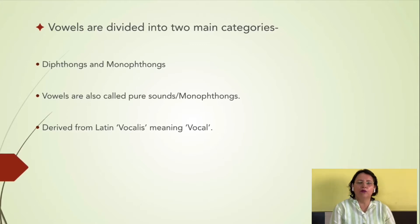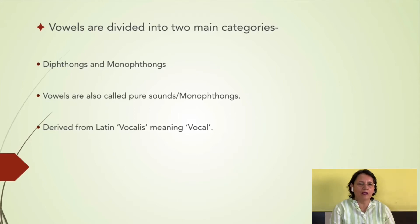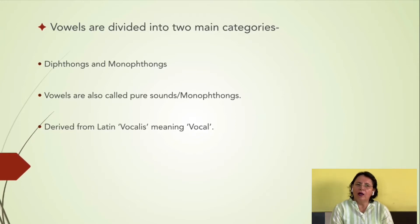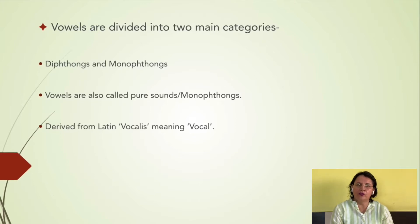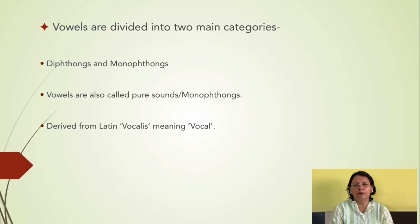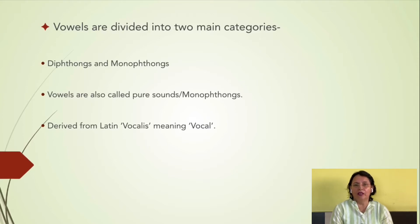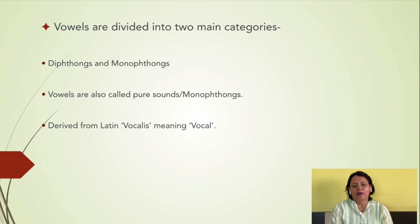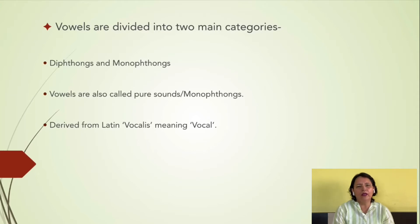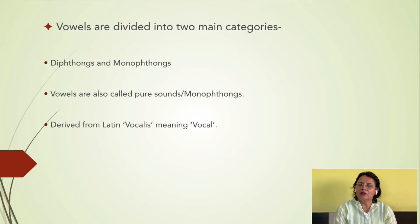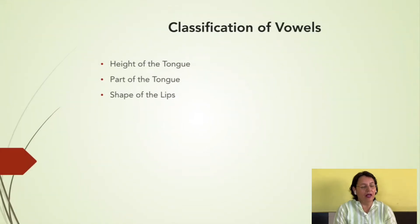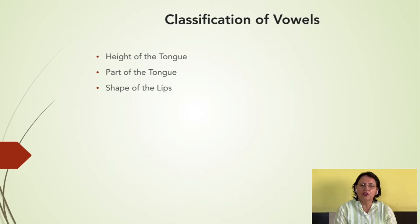Let us see what is the mode of classification of vowel sounds. Vowels are categorized into two main categories: diphthongs, which are also called impure vowels, and monophthongs, which are also called pure vowels. The lesson that we are doing today is monophthongal sounds. Vowel is a Latin word derived from 'vocalis', which means vocal. Seeing to the classification, you will find that vowels are classified as per the height of the tongue, part of the tongue, and shape of the lips.